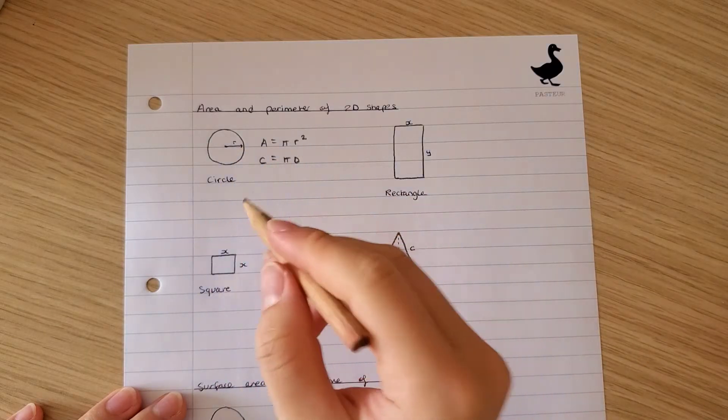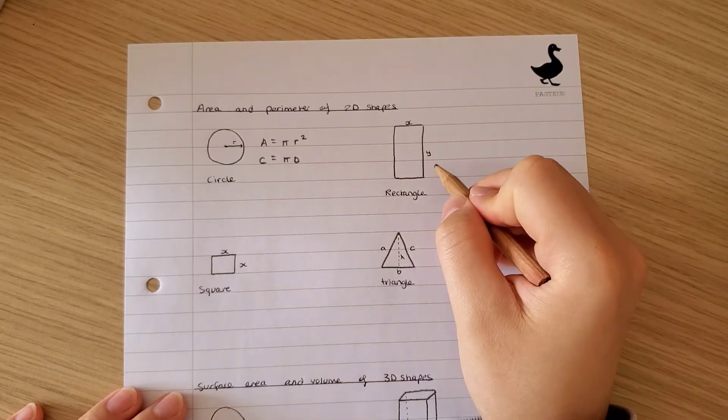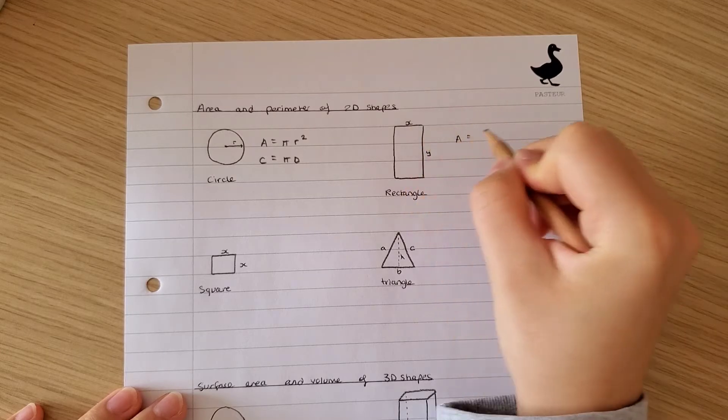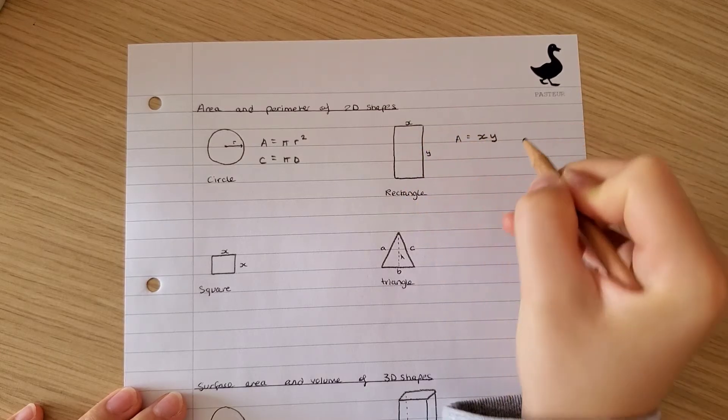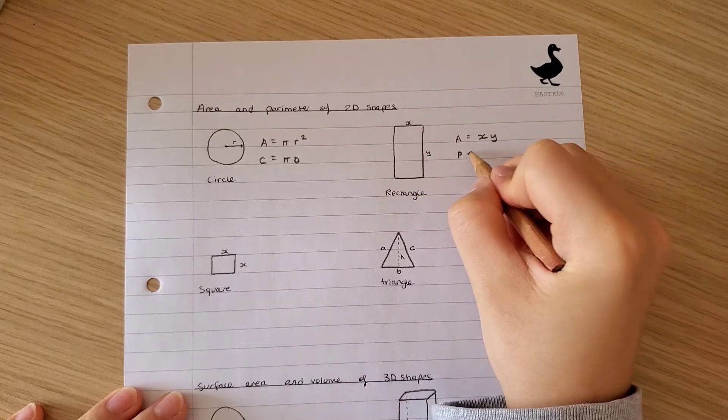So 2 radius is equal to the diameter. For a rectangle, the area is xy and the perimeter is 2x plus 2y to take into account all four sides.